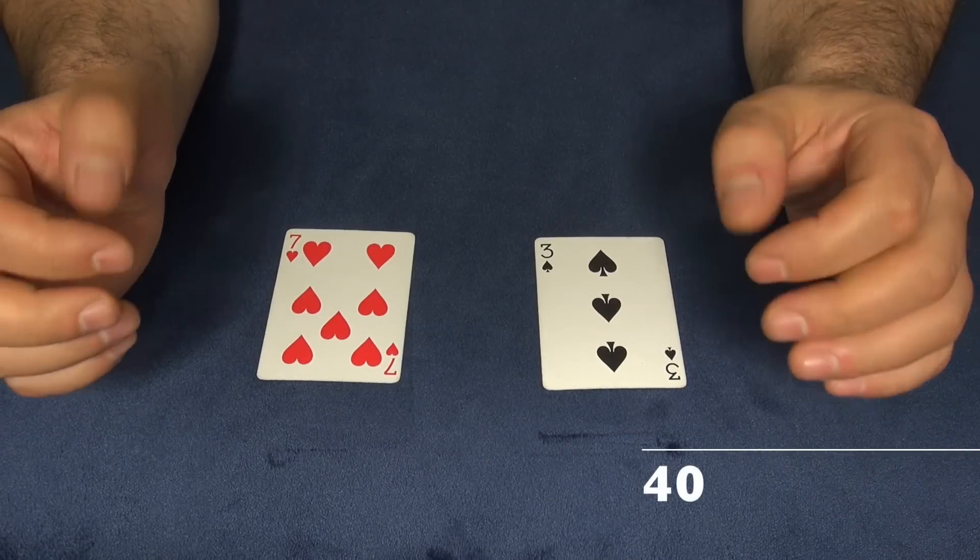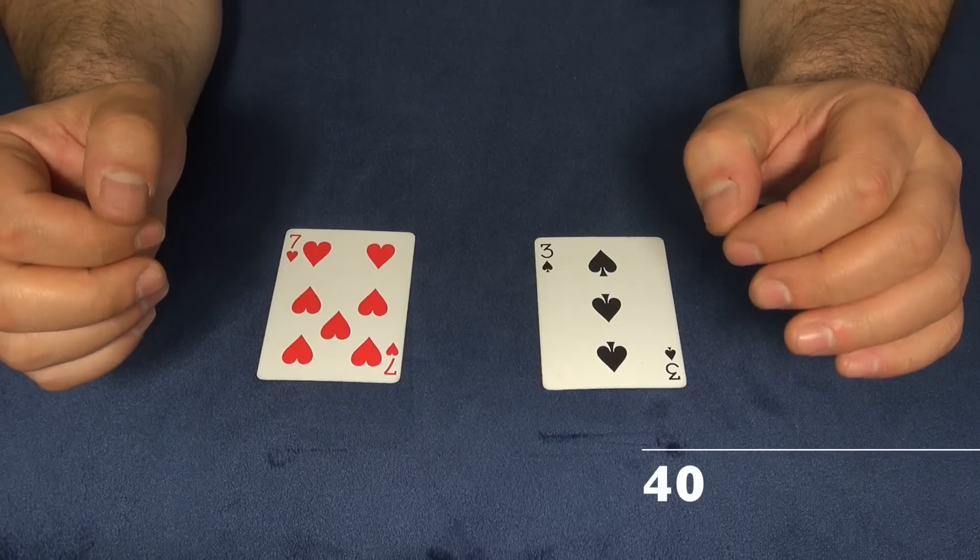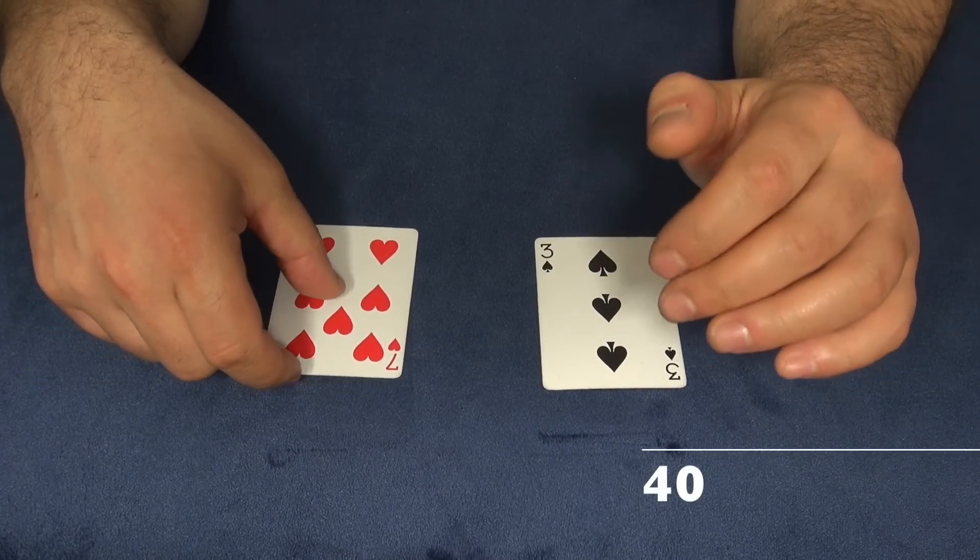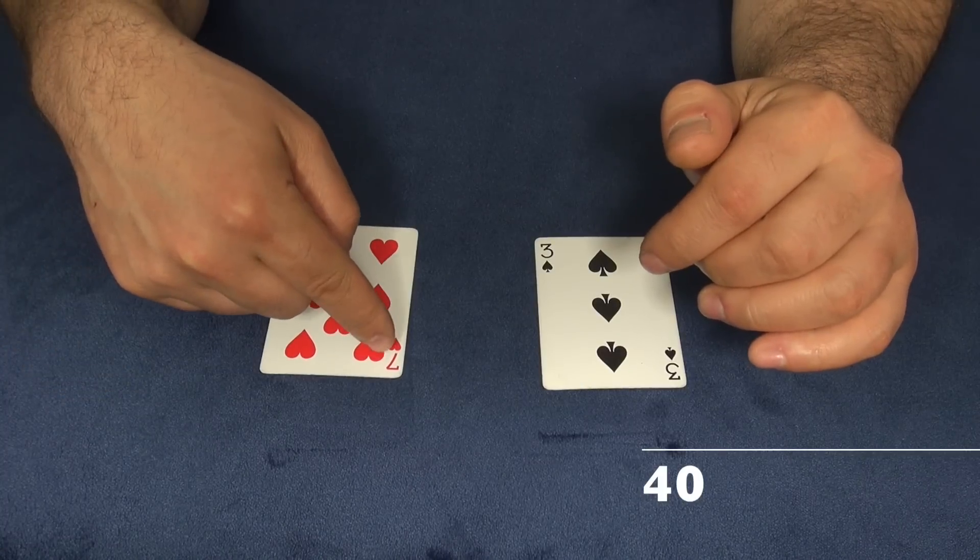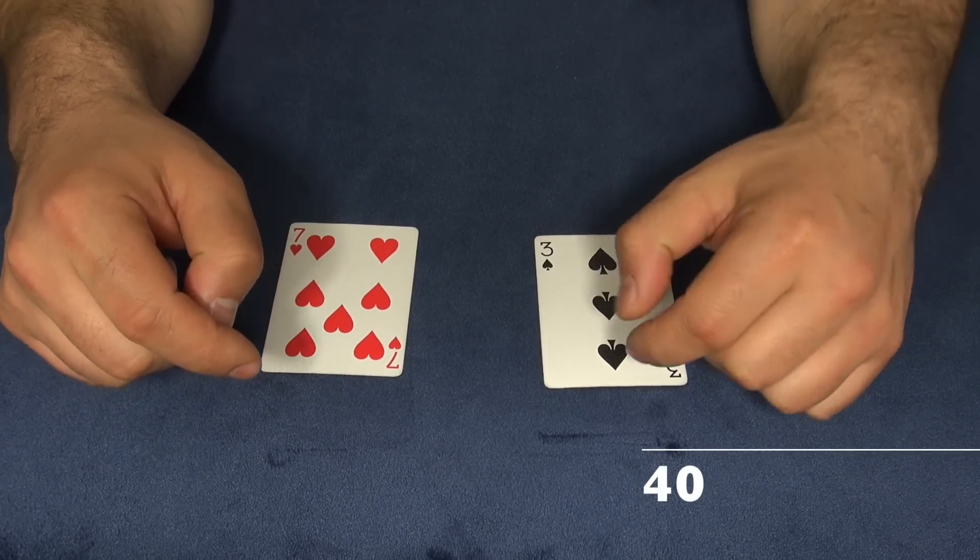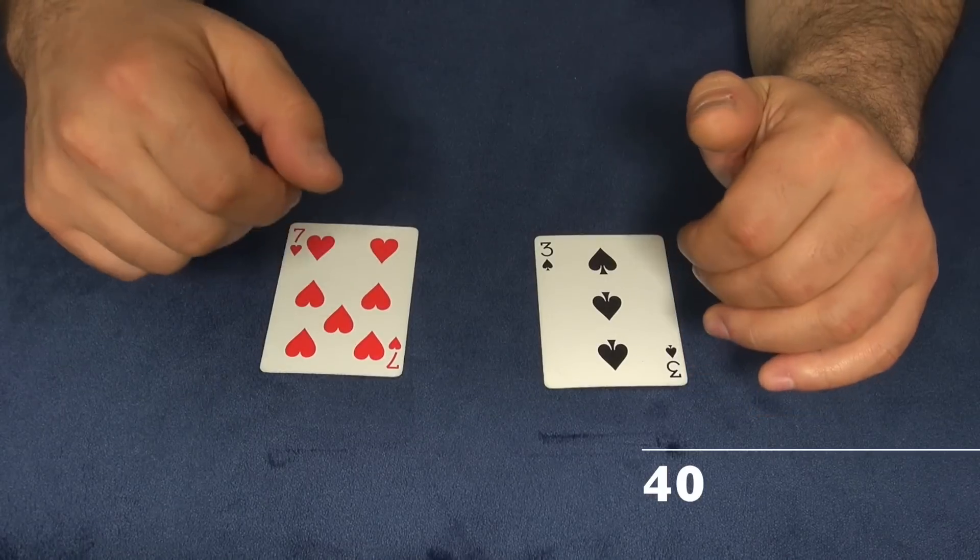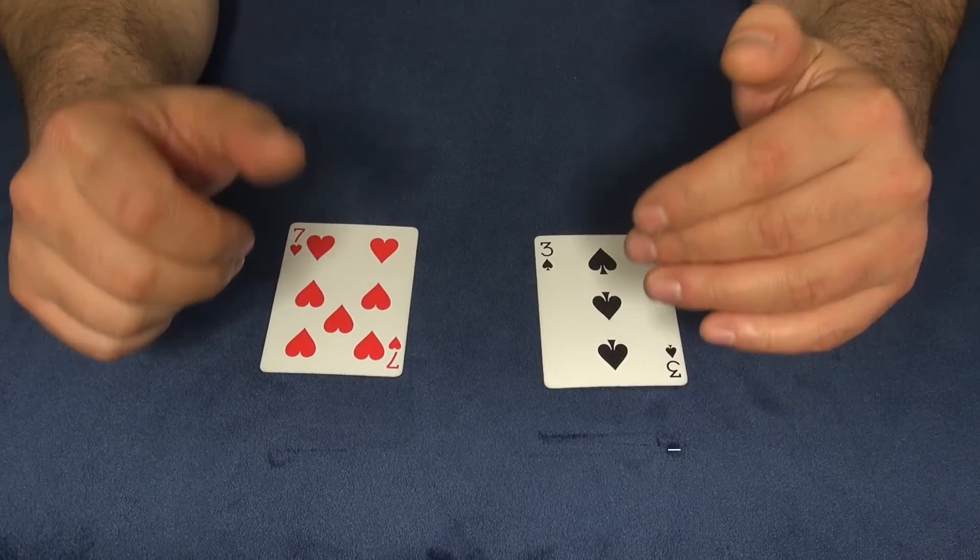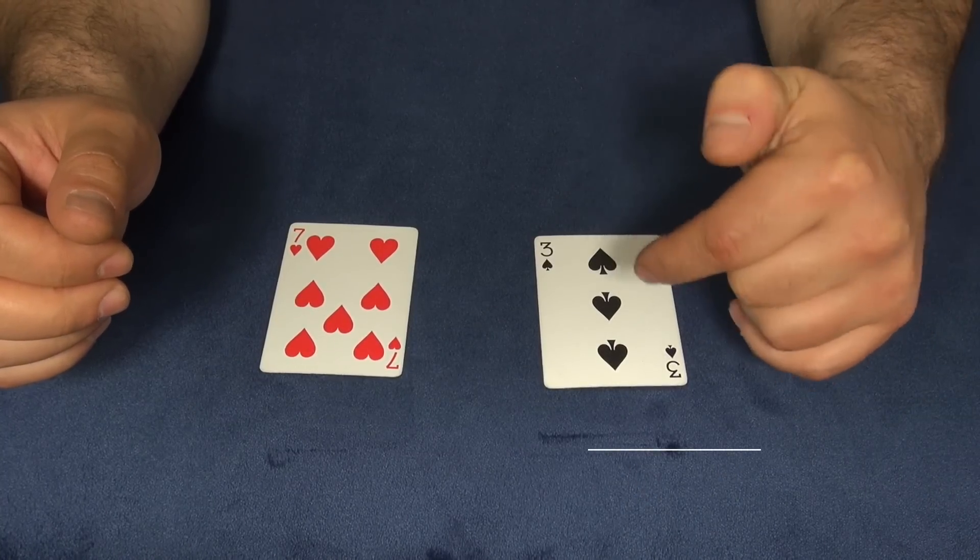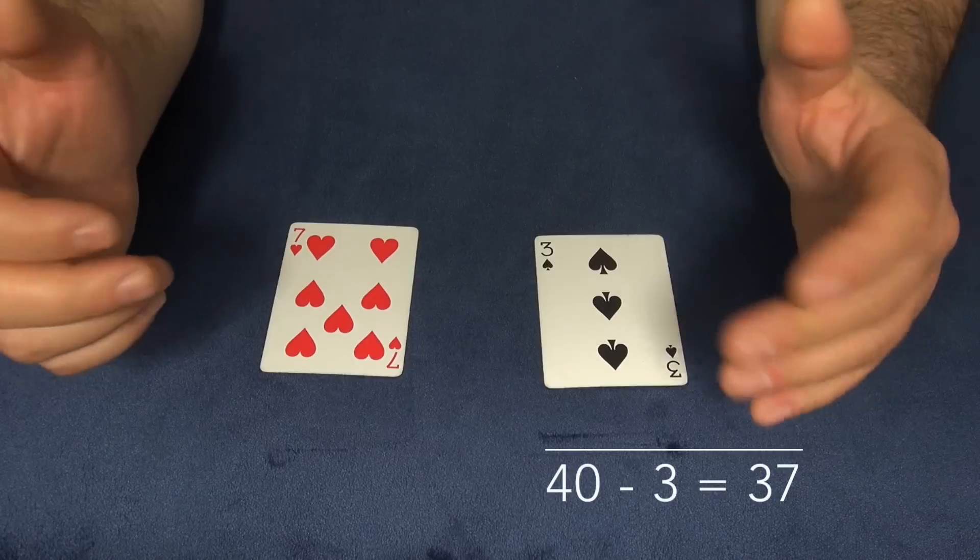Because the last step depends on the card I have. So they have total number 40, and I ask them—in this case, because I have seven—I ask them to subtract three from the total number. So 40 minus three is 37. Why did I say three?